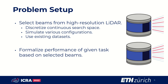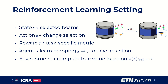Our method works as a simple drop-in module for existing applications and only requires formalizing a task-specific metric. We leverage a reinforcement learning-based setting to iteratively optimize the beam selection. We define the state as the currently selected beams and the corresponding action as changing the selection.